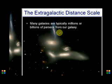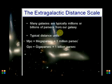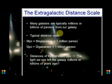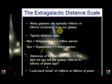Many galaxies are typically millions or billions of parsecs from our galaxy, which is why typical distance units are megaparsecs — 1 million parsecs — and gigaparsecs — 1 billion parsecs. At distances of megaparsecs or even gigaparsecs, the light we see left those galaxies millions or billions of years ago.